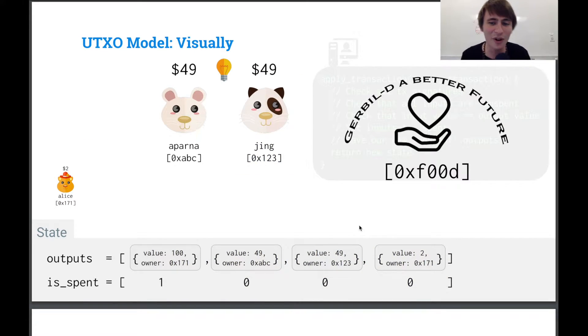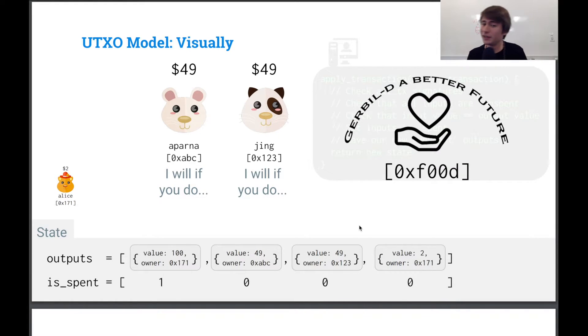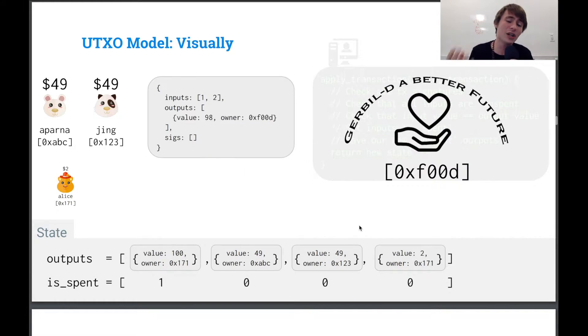So now Jing and Aparna have this great idea. They're going to donate their money to Jer build a better future foundation. And so what do they do? Well, they say, I want to do it, but only if you do. And Jing says, oh, I'll do it, but only if you do. So what do they do? Well, they generate a transaction and this transaction spends both of their outputs and it generates a new output for the Jer build a better future foundation.